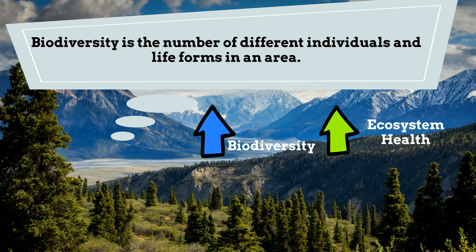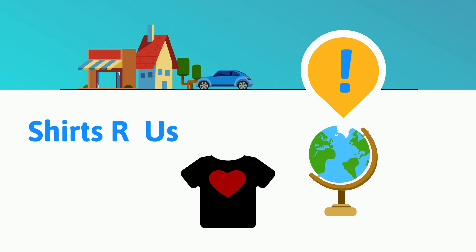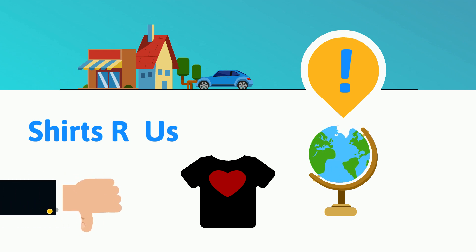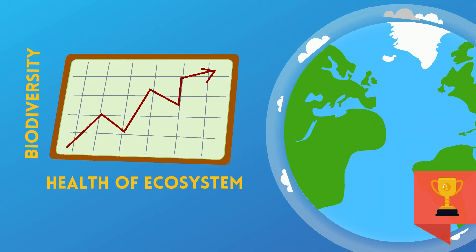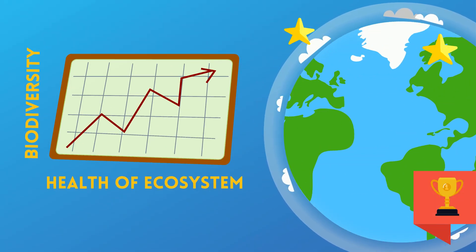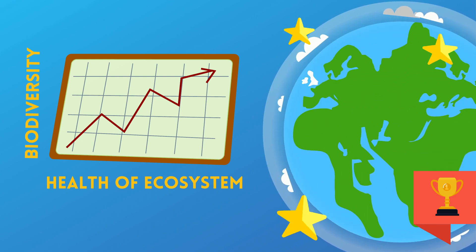Think of it like this. You're running a business. You want your business to be healthy and make money. Imagine you sell shirts. However, you only sell a black shirt with a heart on it, so you're limited. If these shirts go out of style, you're out of business. If you have a variety of shirts, as fashion changes and tastes change, you're better able to adapt to these changes and continue making money. As biodiversity increases, the ecosystem has the ability to adapt to changes, and a healthy ecosystem has a greater chance of recovering from disasters.